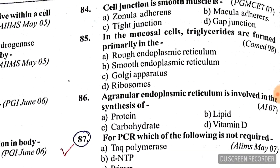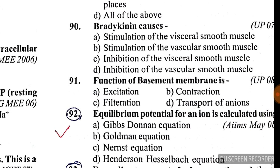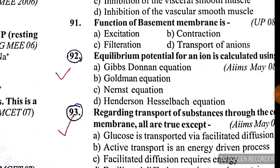Question 87: for PCR, which of the following is not required? TAQ polymerase is required, dNTPs are required, primers are required, but radiolabeled DNA probe is not required. Answer is radiolabeled DNA probe. Question 92: equilibrium potential of an ion is calculated using — answer is C, the Nernst equation.